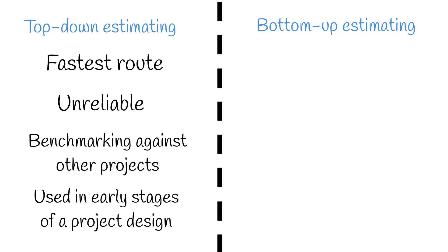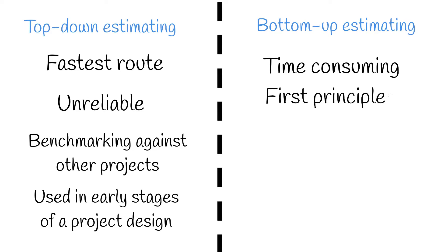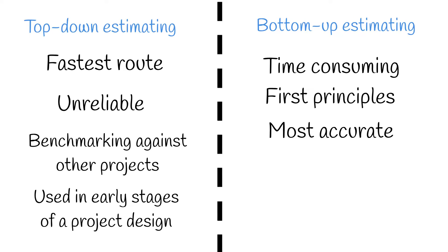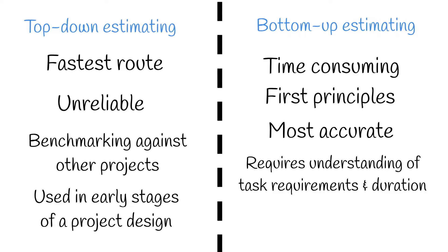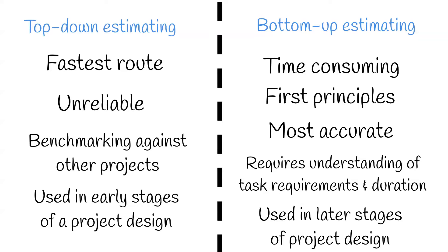Bottom-up estimating is much more time-consuming. It's based on first principles, and provides an accurate cost of a project by understanding the specific task requirements and program duration. A bottom-up approach is used when a detailed design is available, and is usually used for the budget when construction commences.